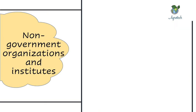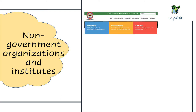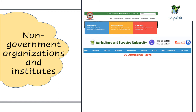The participation from the non-government sector is really interesting and amazing. There are many organizations and institutes working at both levels. For example, Kathmandu University has a biotechnology department offering undergraduate and graduate programs in biotechnology, and Agriculture and Forestry University also has a graduate program in biotechnology.